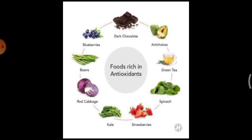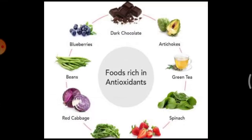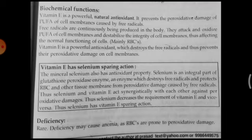This is the illustration of antioxidant-rich food items. Chocolates, green tea, spinach, strawberries, beans and all these items are rich in antioxidants. Vitamin E also acts as an antioxidant. Coming to the biochemical function of Vitamin E, Vitamin E is a powerful natural antioxidant.